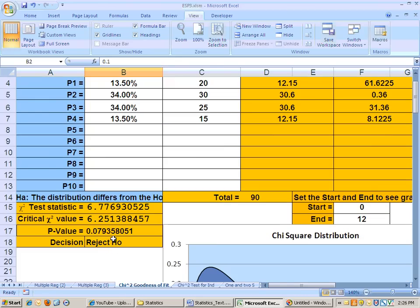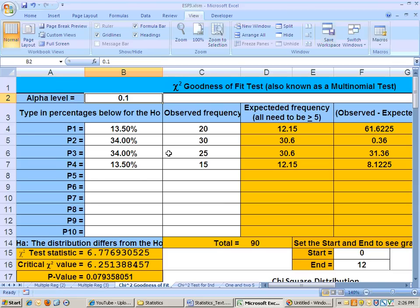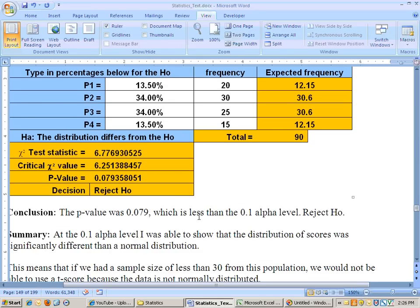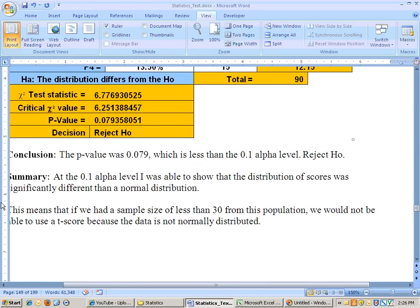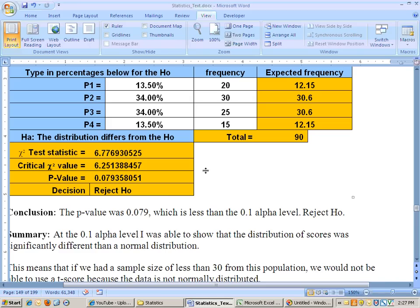Since we got rejected in our hypothesis, we reject this, and we can say that this distribution here is significantly different than the normal distribution. Now, the reason why that's important is because this means that if we had sampled less than 30 people from this population, we could not use a t-score, because we can only use a t-score if it's normally distributed, and we just showed that this data is not normally distributed.